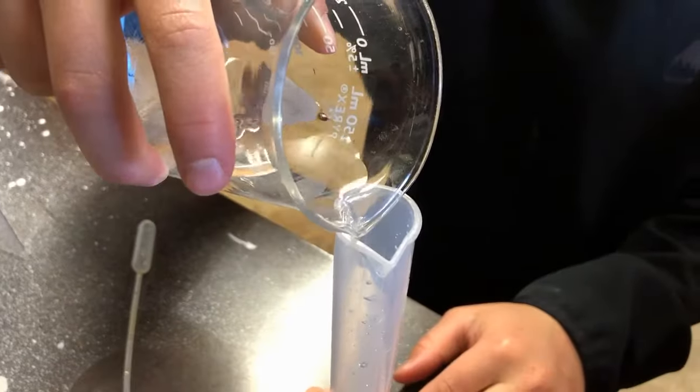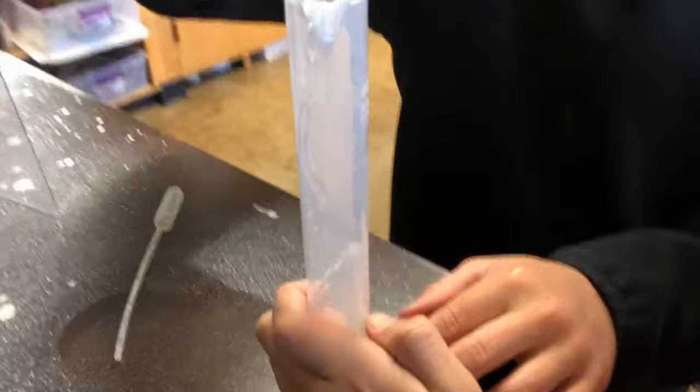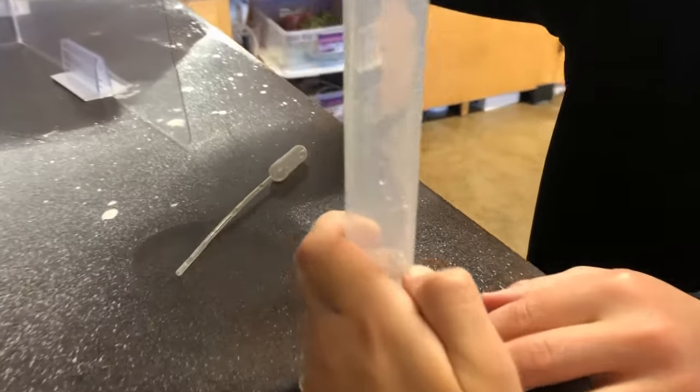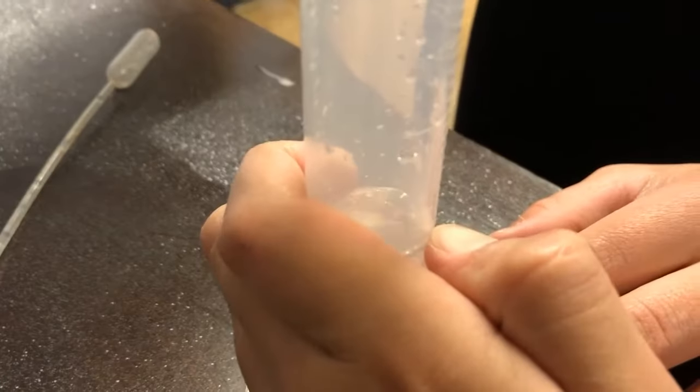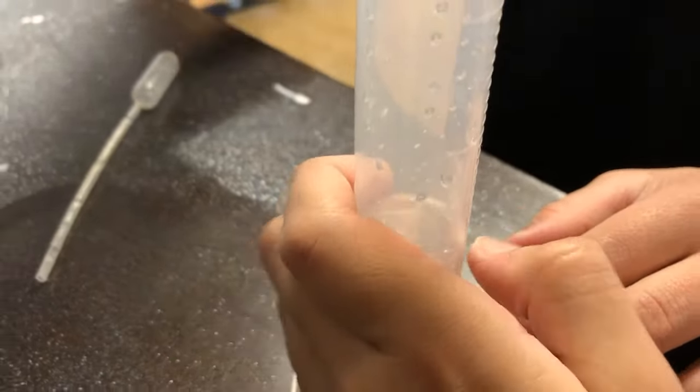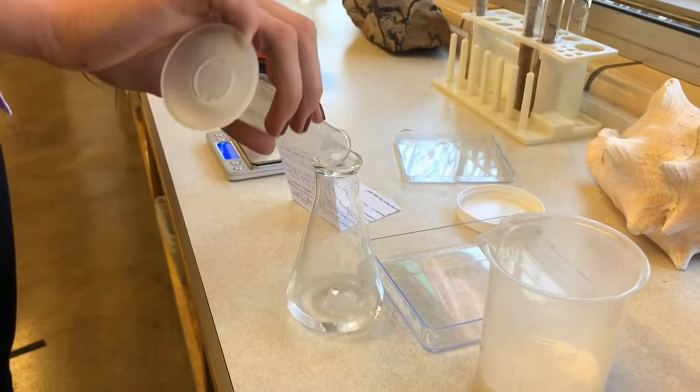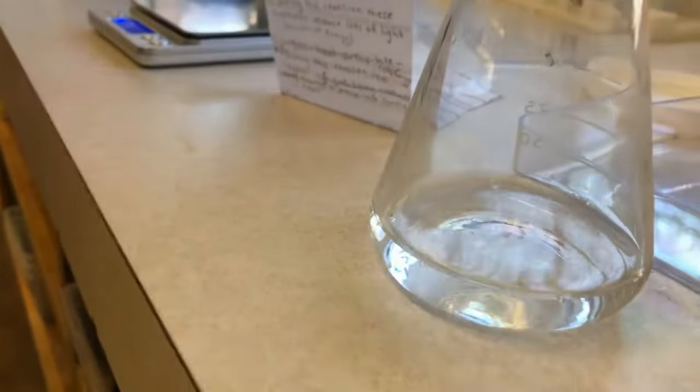To begin with, in class, students measured 20 milliliters of vinegar using the graduated cylinder that you can see there in the video. They then transferred that into an Erlenmeyer flask. The clear liquid at the bottom there is our vinegar.